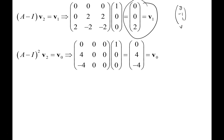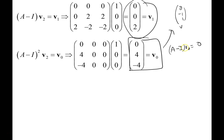To get v0, we take (A − I)² on v2. It's okay for v0 to be a multiple of the original eigenvector — in fact it will always be so, because (A − I) on v0 equals 0. That means v0 is an eigenvector, and you know you're doing it right when that happens.